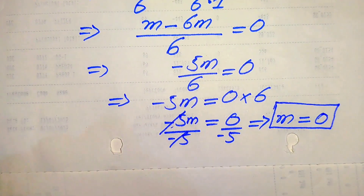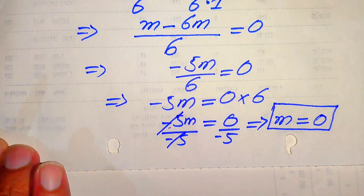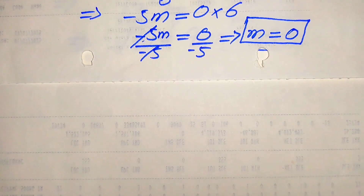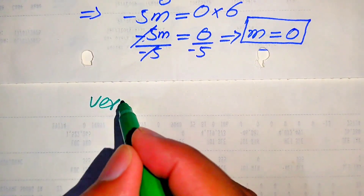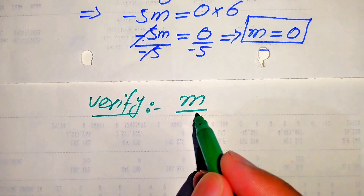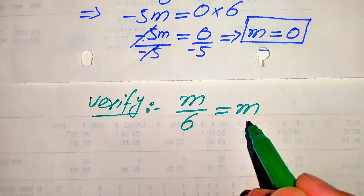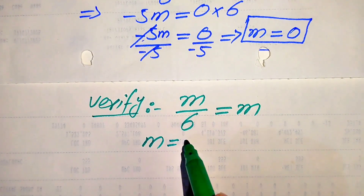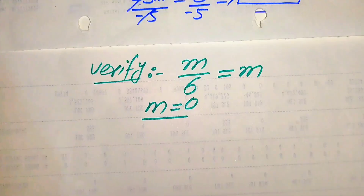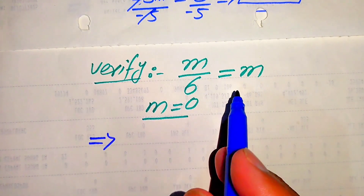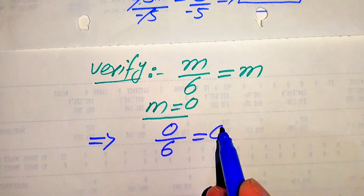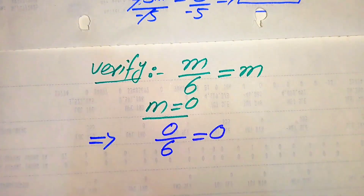This is the final answer: from both methods we get the same answer, m equals 0. Now in the next step we verify this value of m by checking whether it satisfies the given equation or not. We copy down the given statement m over 6 equals m, and the value we found is m equals 0. We put this value into both sides of the equation, giving 0 over 6 equals 0.